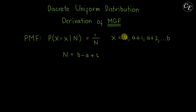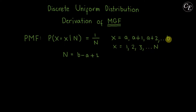Now if you're looking for a derivation where the value of the random variable is from one to n instead of a to b, that derivation is on another video and I provided the link in the description below, so you can check it out if you are interested. The derivation in this video is where the random variable ranges from a to b. For this n, it has a value of b minus a plus one, where b and a are as shown.